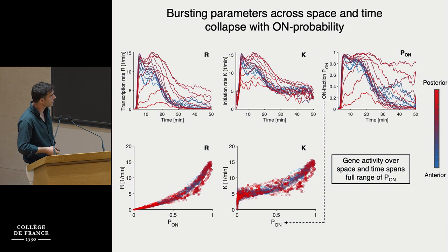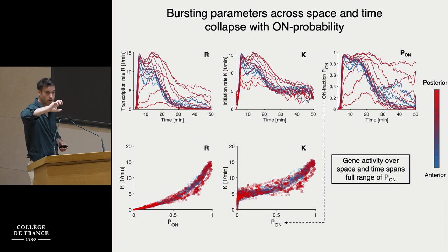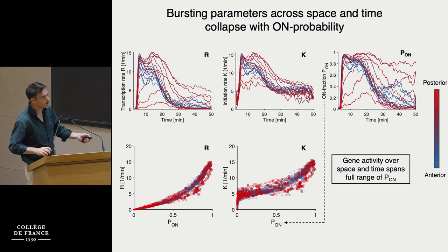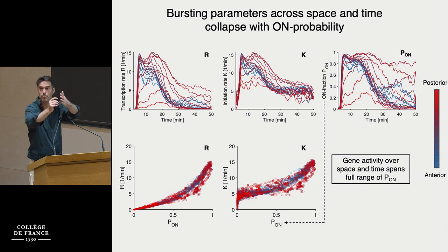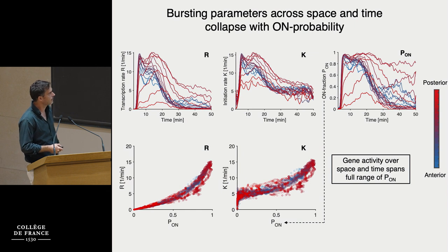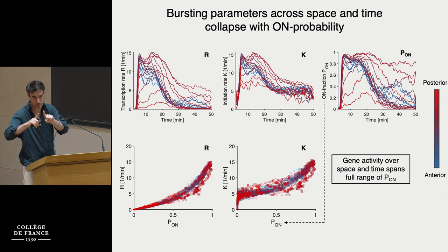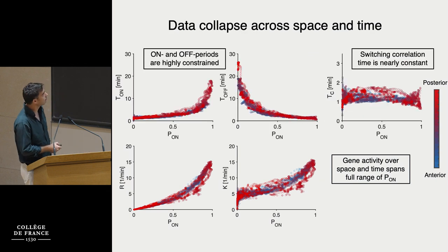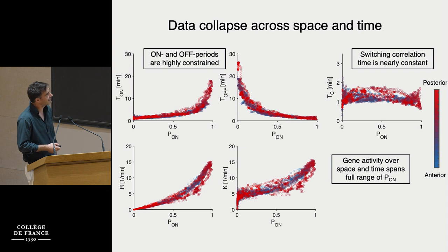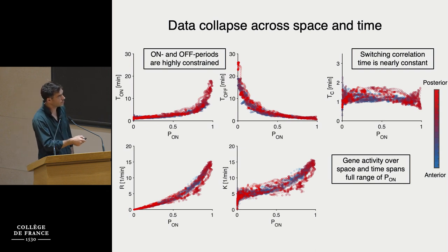You have two very tight relationships. For the average rate as a function of p-on, we have the luxury with hunchback that instances span the full dynamic range — from totally off at zero to fully on at one — going all the way to 15 polymerases per minute. For the initiation rate, the dynamic range is much smaller, a factor of three; much of that comes from not separating sister chromatids, so if we could, it would be almost flat. The on and off periods also collapse into two tight asymmetric relationships. Most surprisingly, the switching correlation time appears flat and constant.